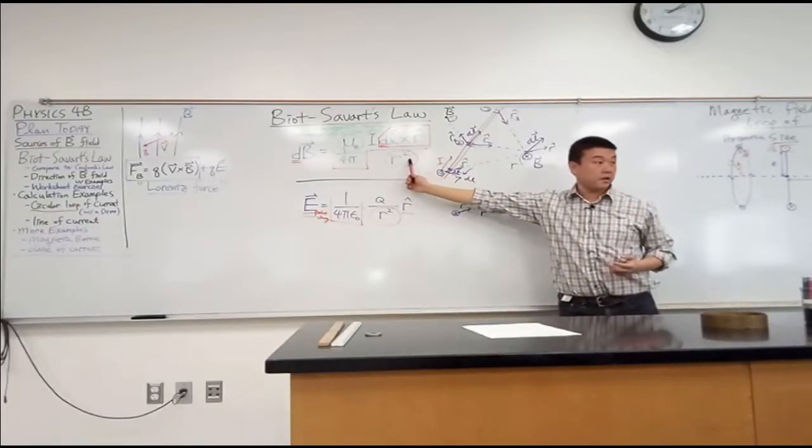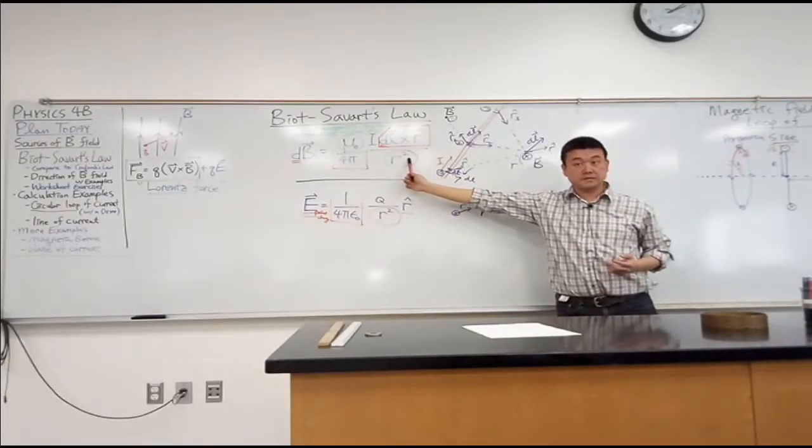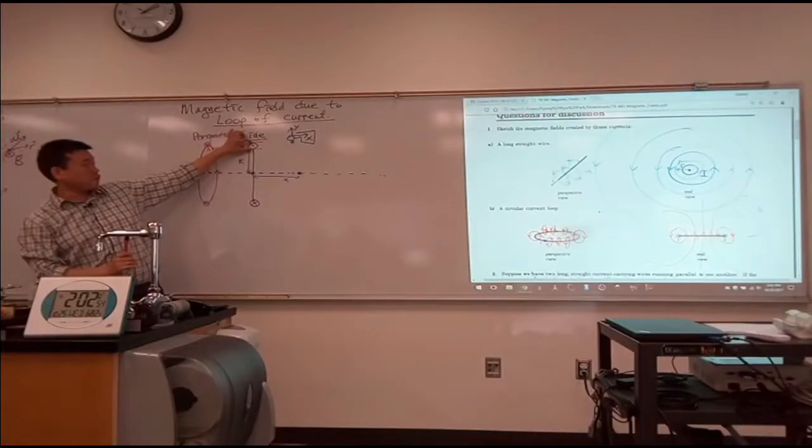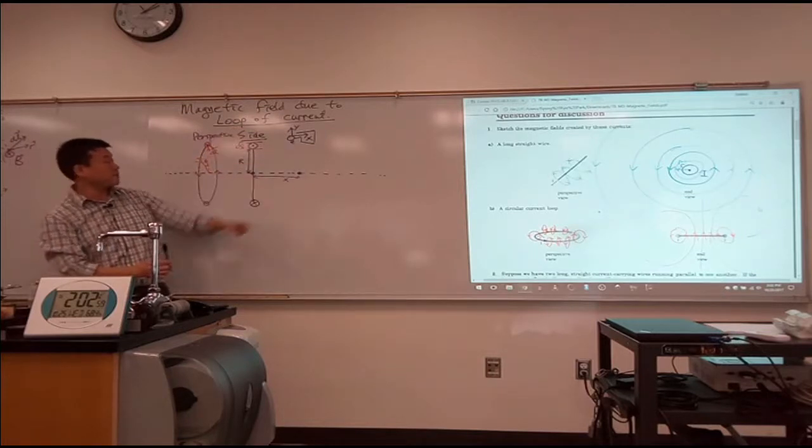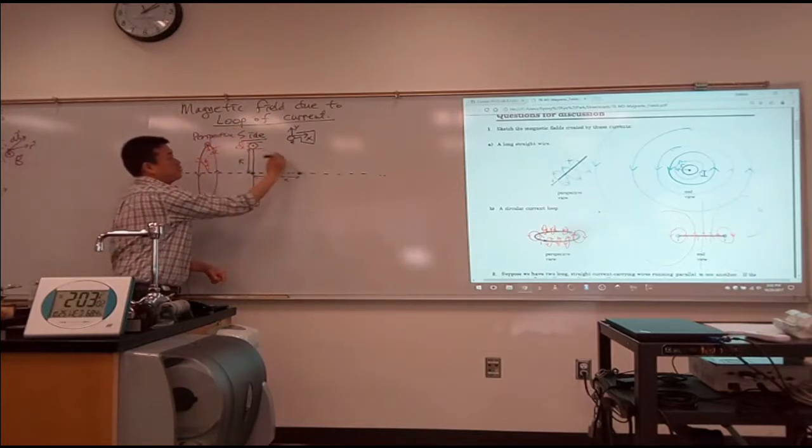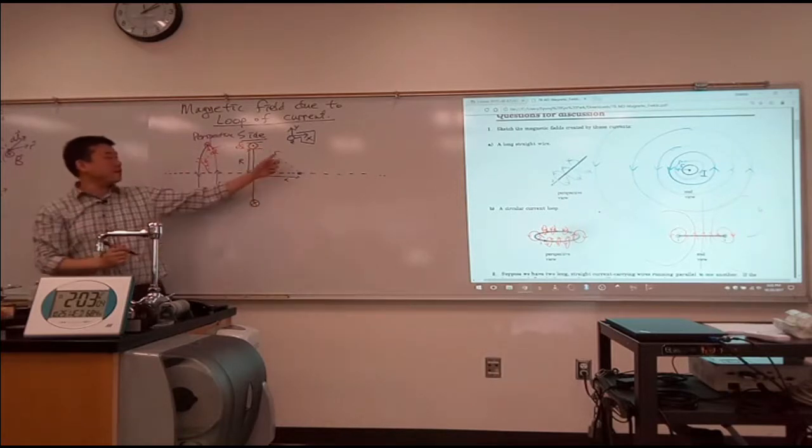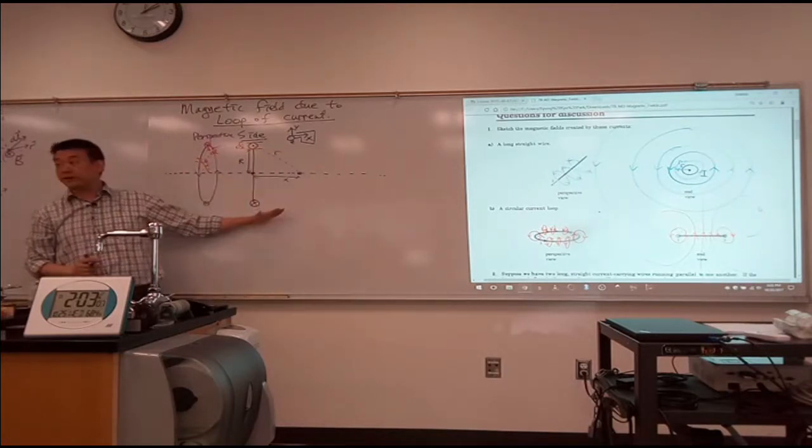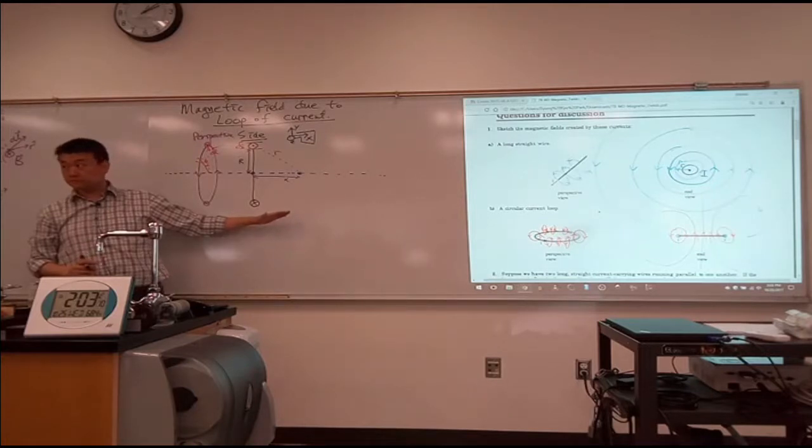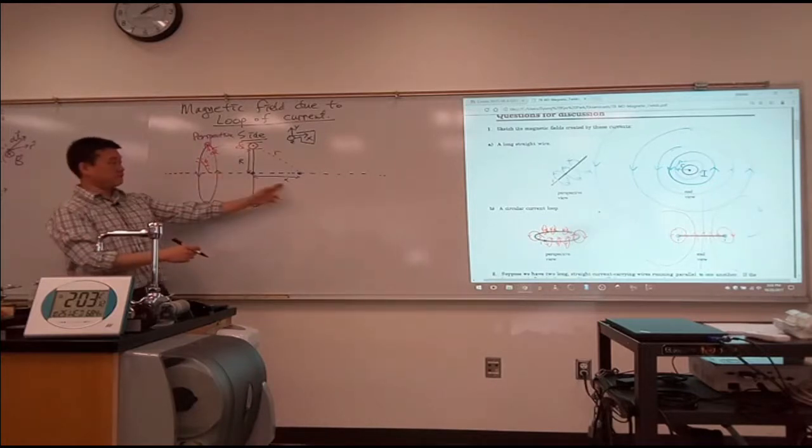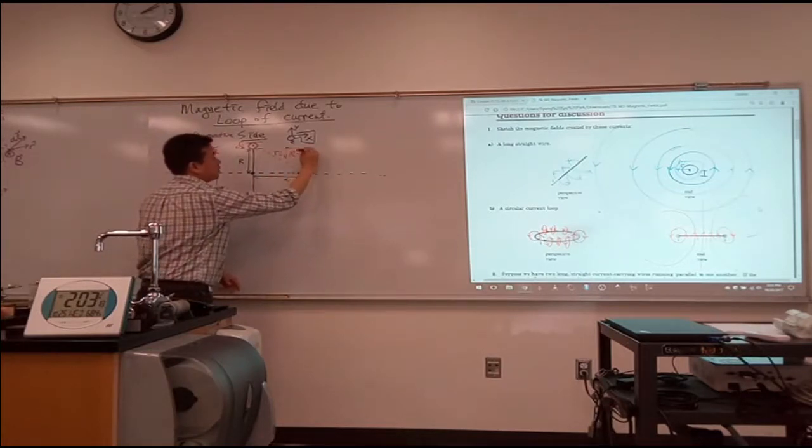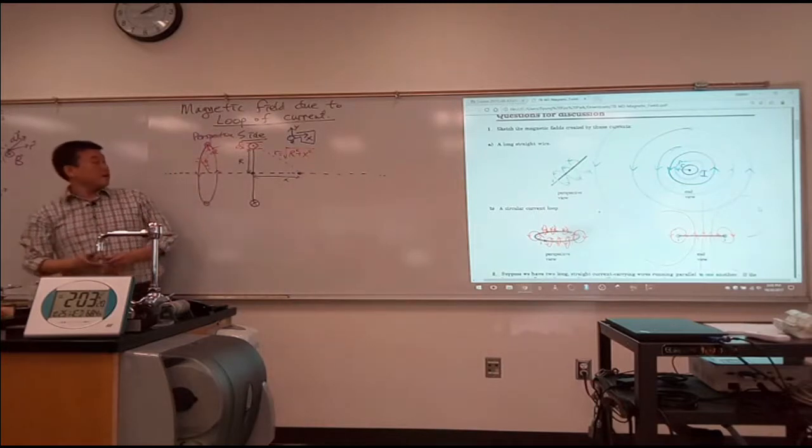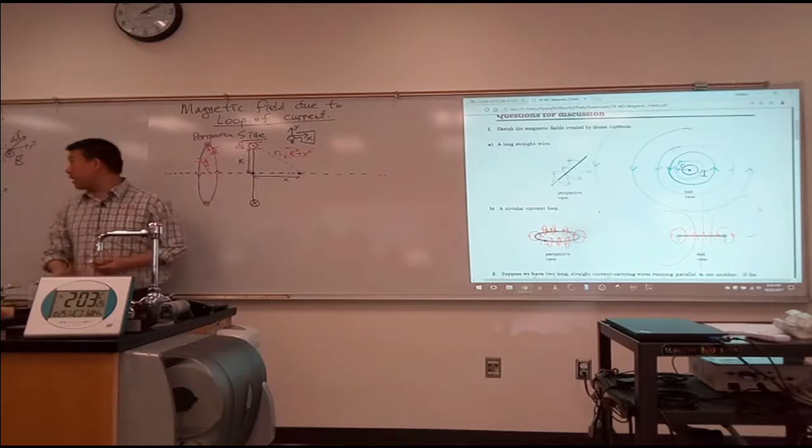All right. The R, in Biot-Savart's law, it stands for the distance between the section of the wire that you are looking at, and the point. So, this is the distance R. Do we have enough information to write down what R is, in terms of all the known quantities here? Yes? Pythagorean theorem, R, big R and X. So, this distance is square root of R squared plus X squared, and I'll be using that.